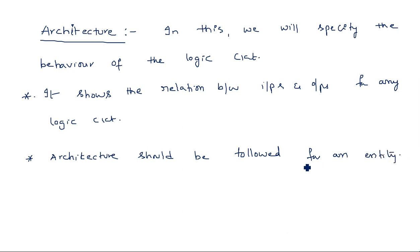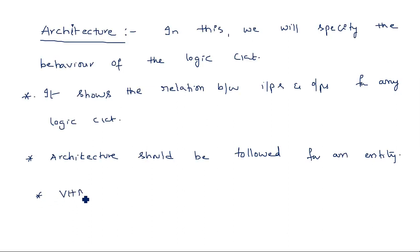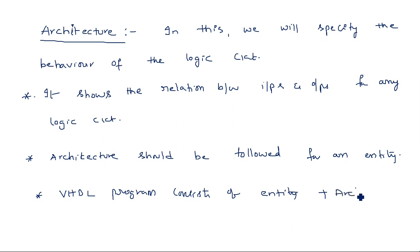Once entity is written, it must definitely be followed by an architecture — then only it gives you a complete VHDL program. So a VHDL program consists of entity followed by architecture, which together give you the complete program.